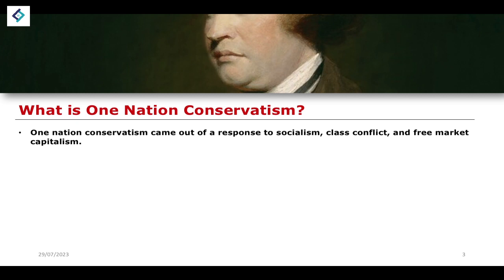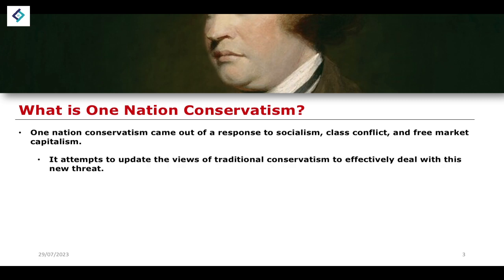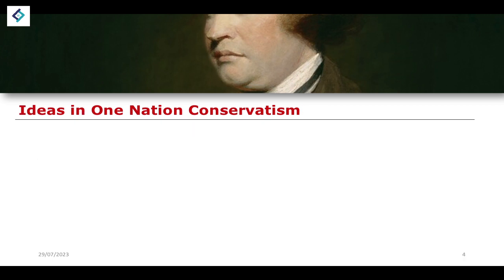When we talk about one-nation conservatism, this comes in around the second half of the 1800s, and it is a response to the growing rise of socialist writing, class conflict, and free market capitalism — all of these being very important in the development of societal progress during this period. What one-nation conservatism attempts to do is update the views of traditional conservatives to deal with these new threats: the threats of socialism, class conflict, and free market capitalism.